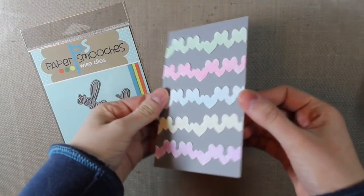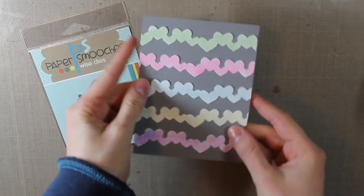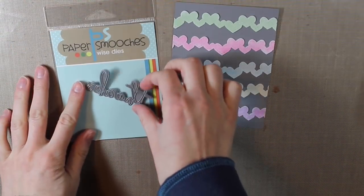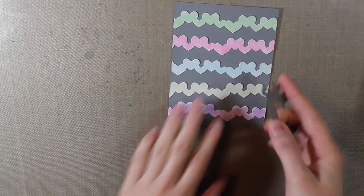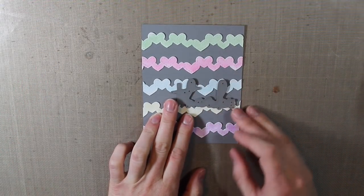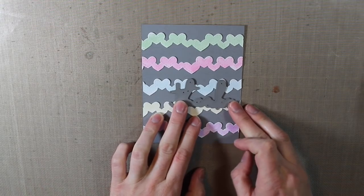I went ahead and adhered down all of these hearts onto a piece of gray cardstock. I used my Xyron Sticker Maker so that they were completely flat and they didn't curl up or anything like that.